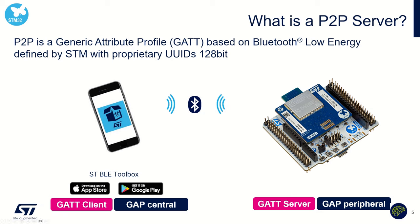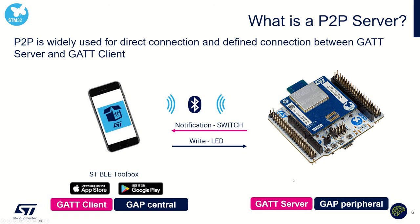The Peer-to-Peer Server will run on the Nucleo board and will communicate with a Peer-to-Peer Client running on a smartphone. Our smartphone will be the GATT client and GATT central, whereas our Nucleo board will be the GATT server running as GATT peripheral. In this example, we will establish a Bluetooth Low Energy connection between the two devices. When we press a button on the Nucleo board, it will send a notification to the GATT client — our smartphone. And from our GATT client, we will be able to write into characteristics to control and toggle the LED on the GATT server side.